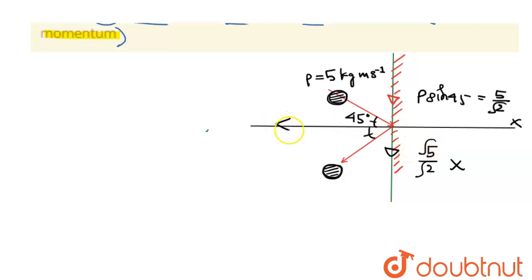Now when the block was moving from here to here, its component will be in this direction, that will be p cos 45. And after it bounces, after the impact, the component will come in this direction, it will be p cos 45.